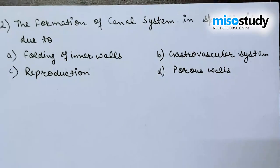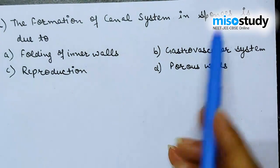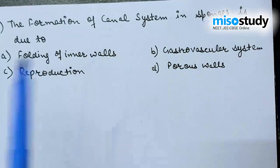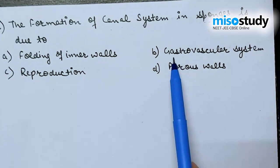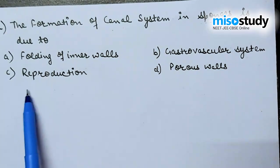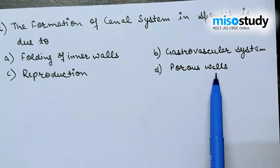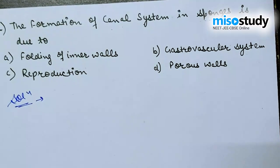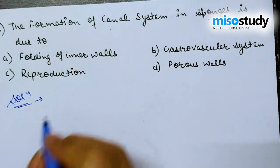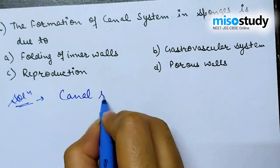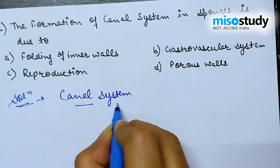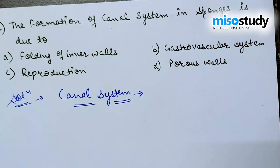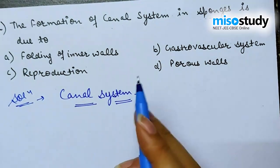The next question is: the formation of canal system in sponges is due to — option A) folding of inner wall, B) gastrovascular system, C) reproduction, D) porous wall. As we know, when we discuss sponges in phylum Porifera, there is a presence of various types of canal systems. Canal systems are important because they take in various materials and nutrients through water, and release excretory waste out from the body.